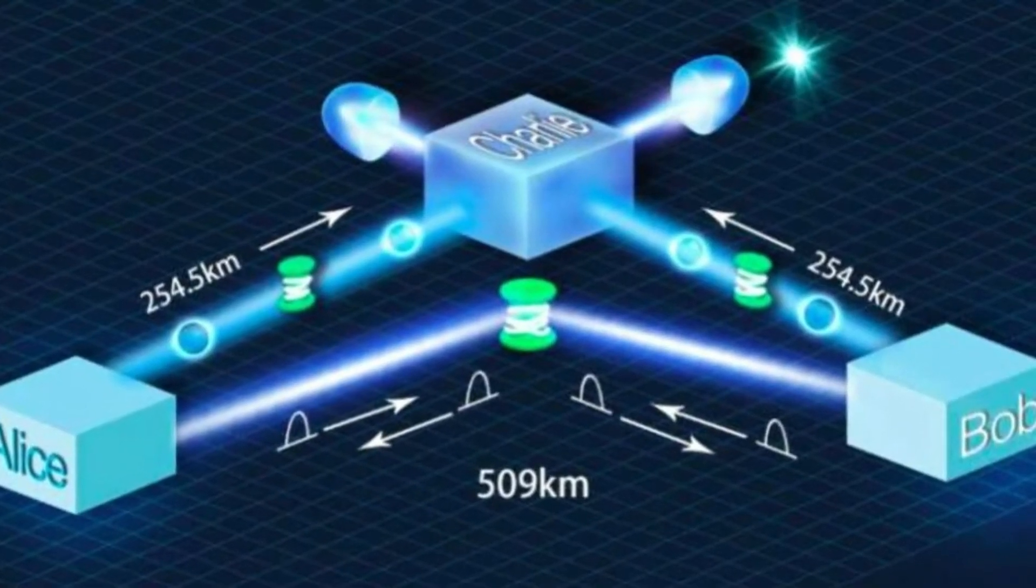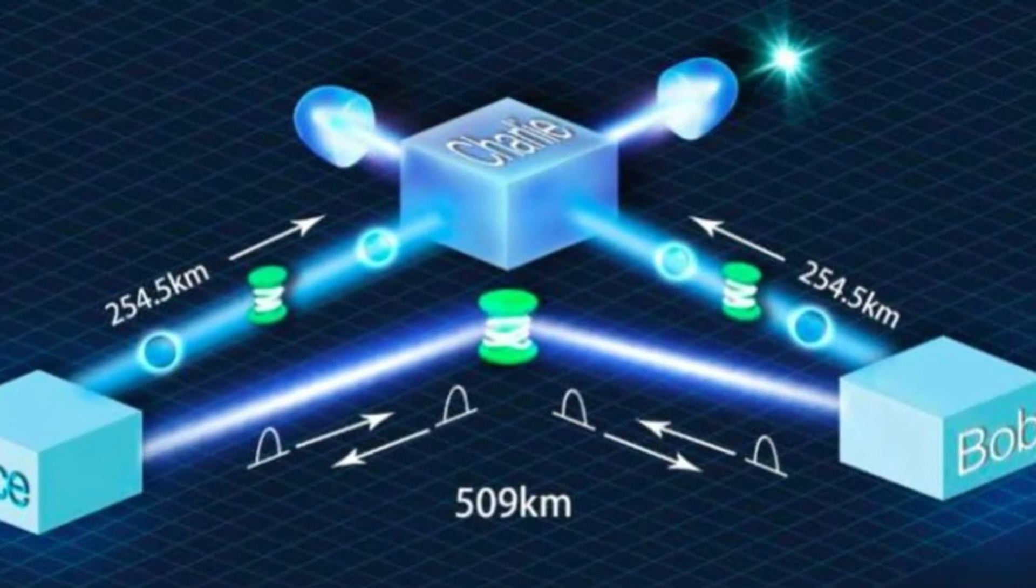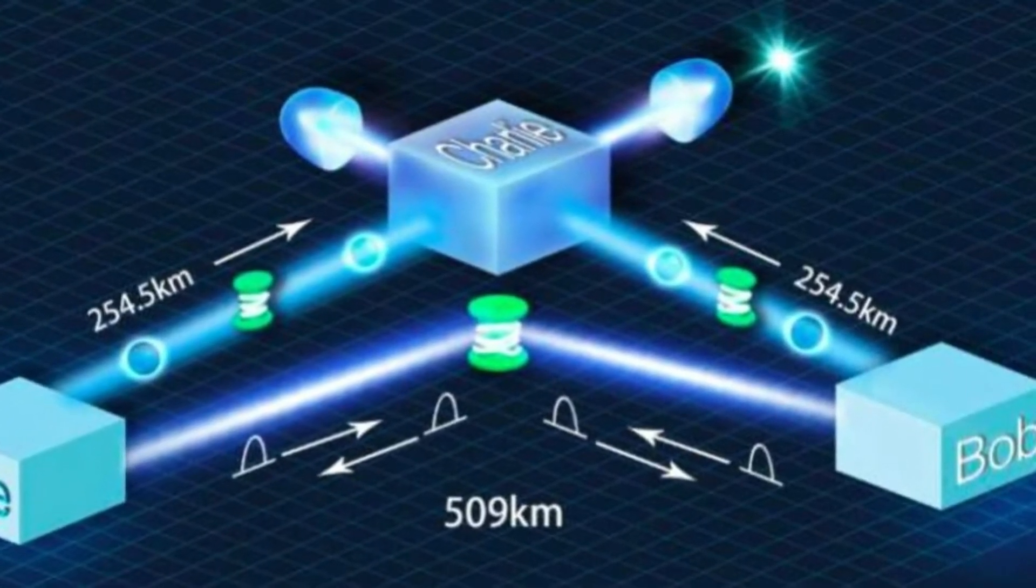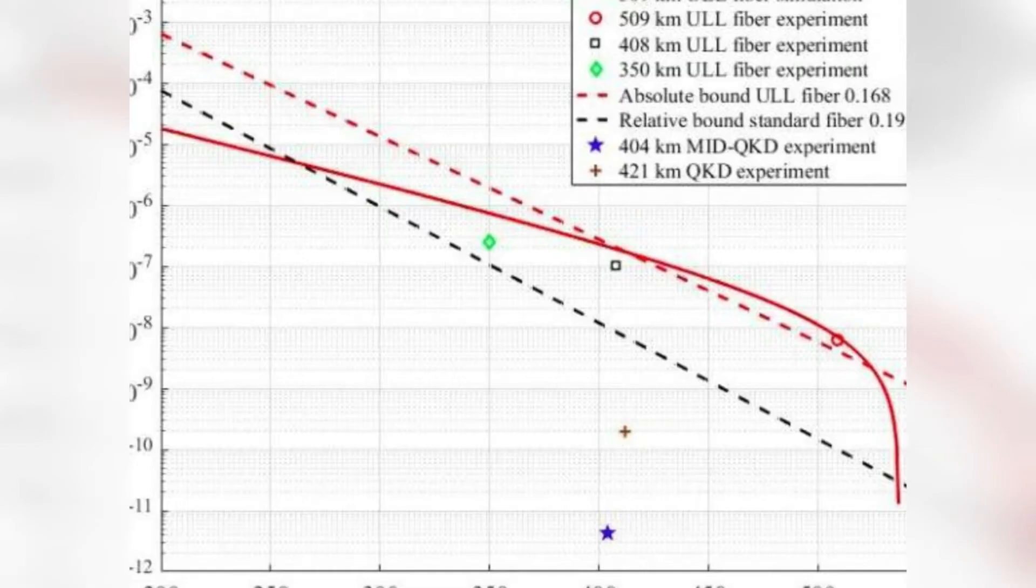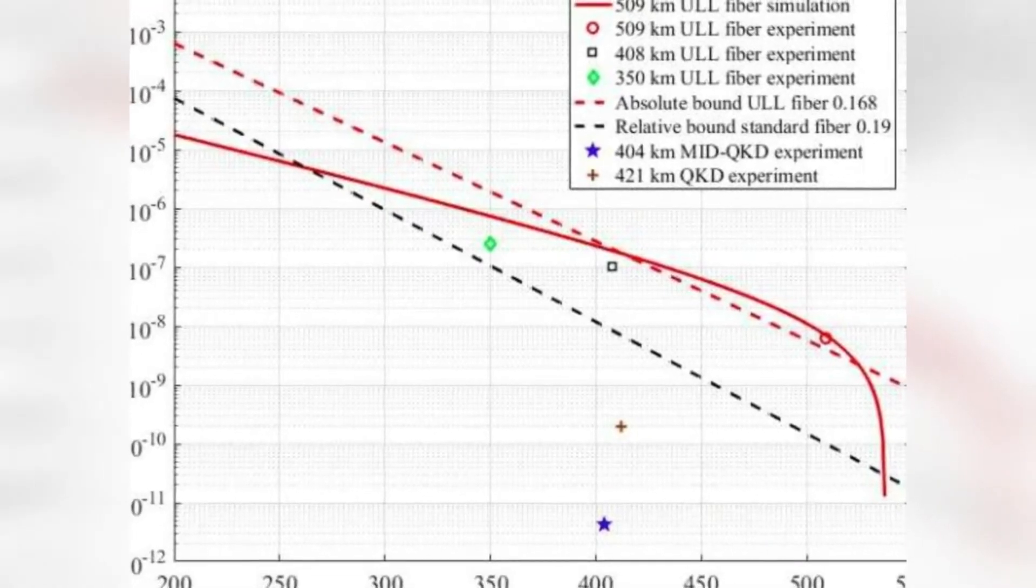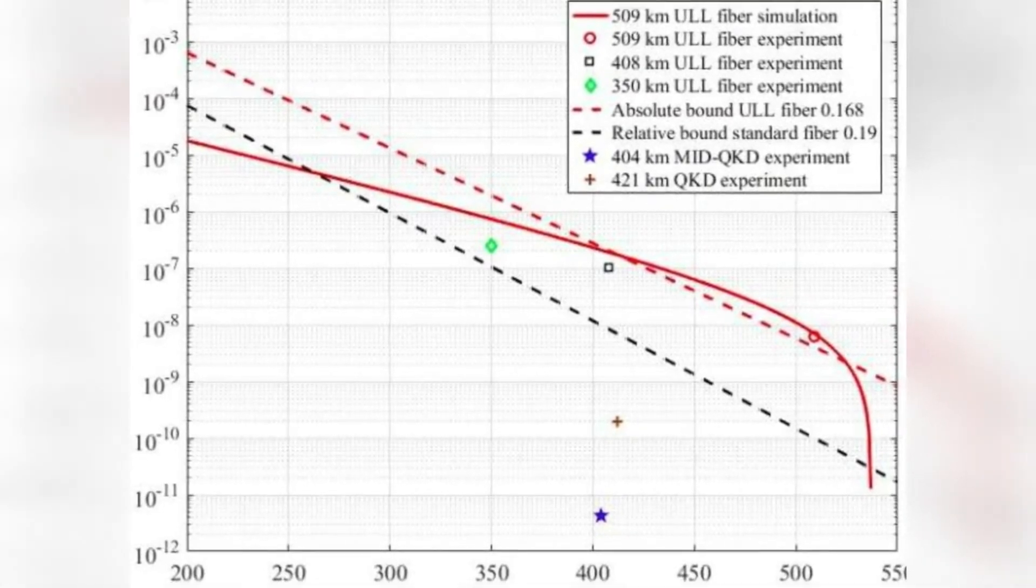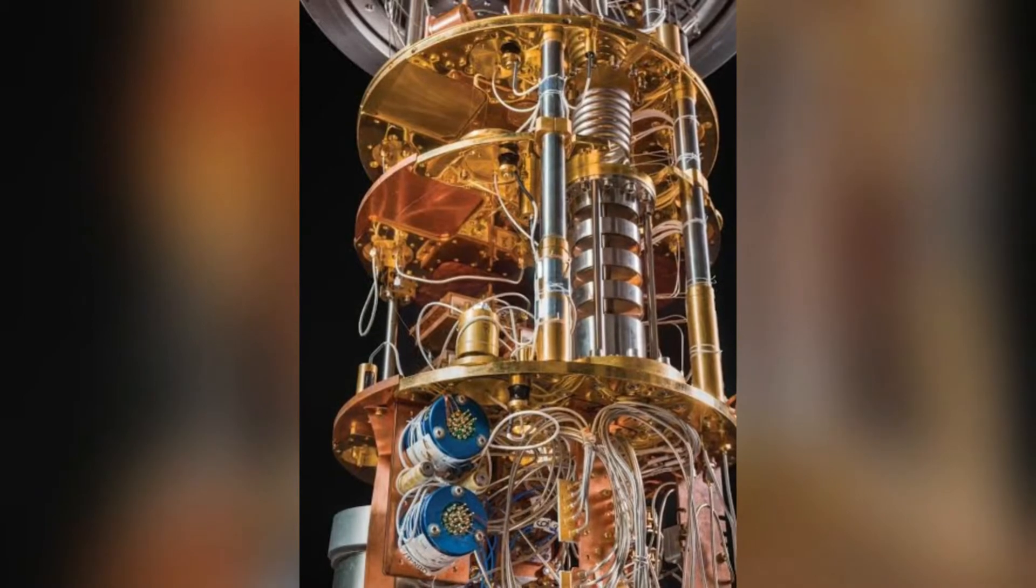Study Achieves a New Record Fiber QKD Transmission Distance of Over 509 Kilometers. The Sending or Not Sending Twin Field (SNSTF) protocol has so far proved to be a highly promising strategy for achieving high rates over long distances in quantum key distribution (QKD) applications.